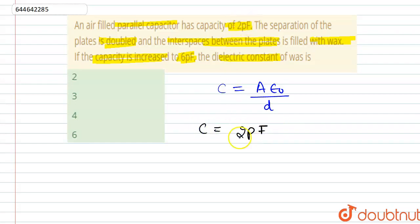So we can write 2 pF = A ε₀ / d. Now the separation between the plates is doubled, which means d' = 2d, and in between that space wax is filled, which means the capacitance C will become